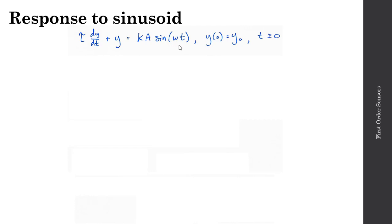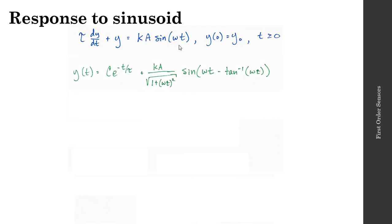So prior to time t equals zero, my input is going to be zero, and at time equals zero, I'll now input my sine wave. Here then is the solution to this differential equation. Y of t is equal to c times e to the minus t over tau, and that component of the solution should be familiar.